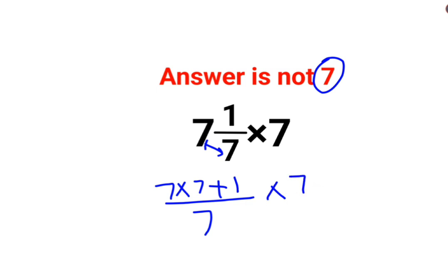Which is then again multiplied by 7. So here this becomes 50 upon 7 into 7. This gets cancelled, so the answer for this question is supposed to be just 50.